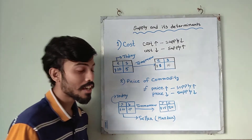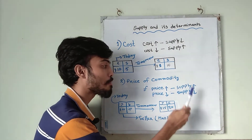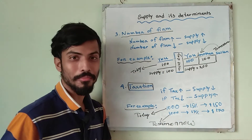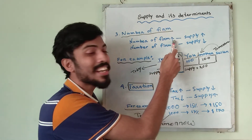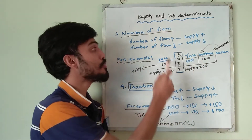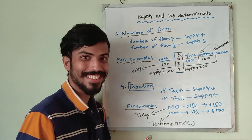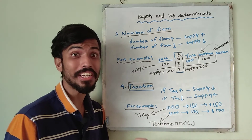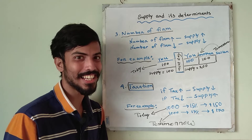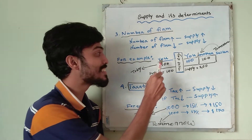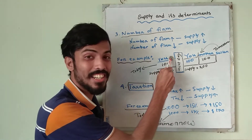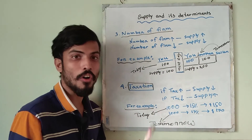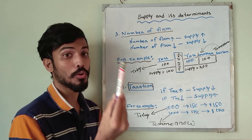Our third element is number of firms. If the number of firms increases then supply will increase; if the number of firms decreases then supply will decrease. Let's follow an example — say you are a seller and you produce 100 units of markers.